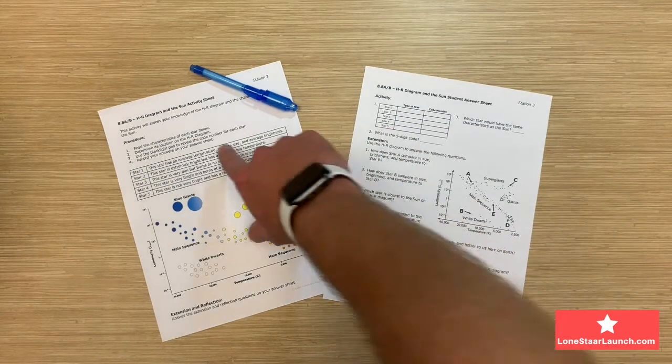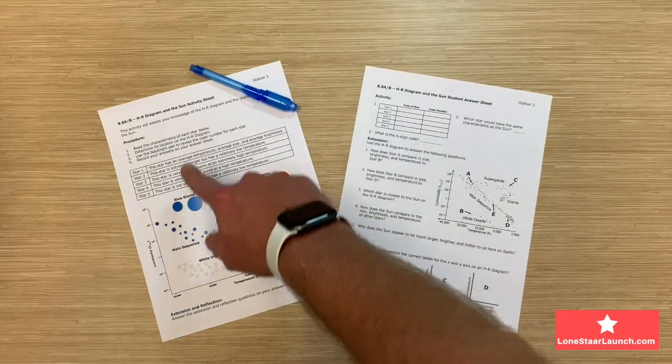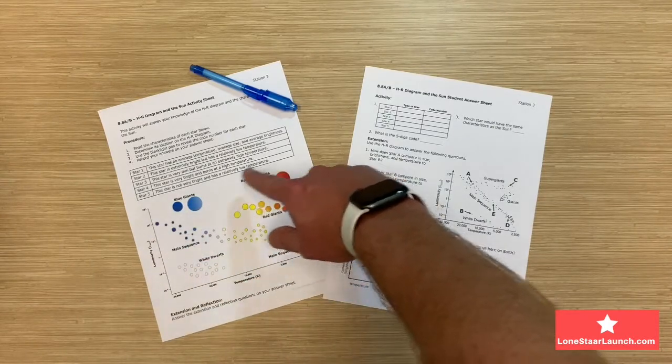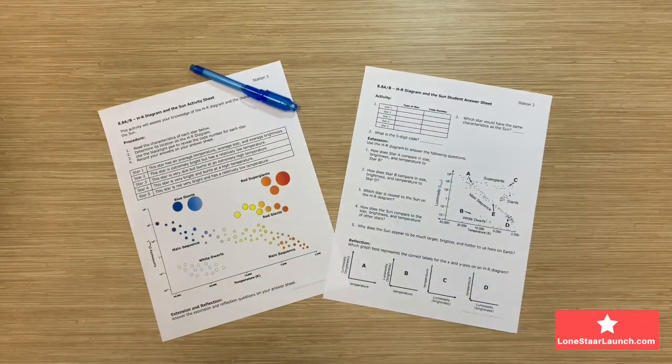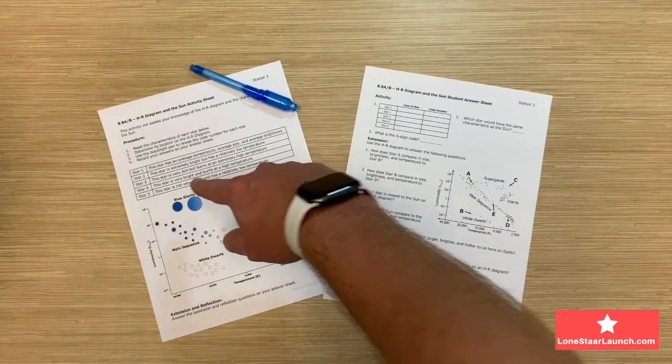Students will need to read each piece of information about the stars and then use the UV pen to shine it on the area of the HR diagram that it correlates with. There is a built-in student check using the five digits that are revealed, but they must be in the correct order.